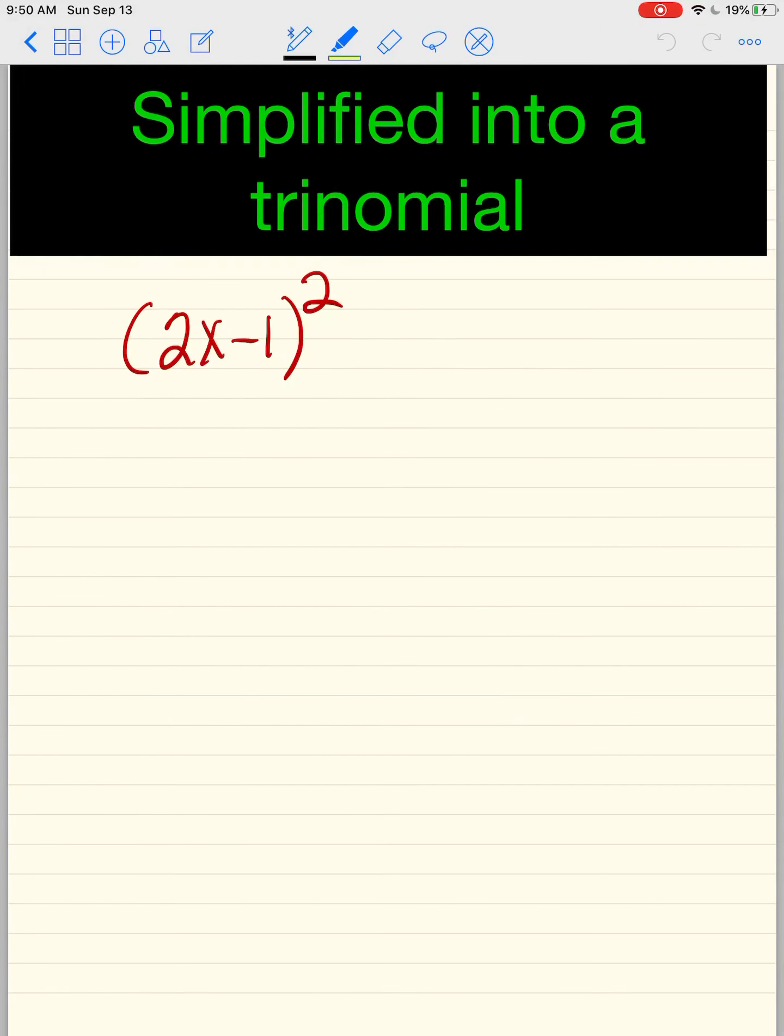2x - 1 squared. Well, what does it mean to be squared? It means the term times itself. So if I said 5 squared, you would say 5 times 5. 7 squared, 7 times 7. 2x - 1 squared is 2x - 1 times 2x - 1.